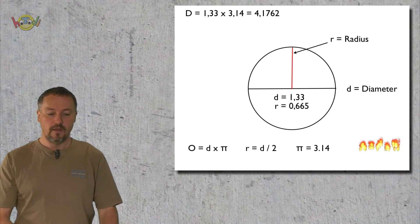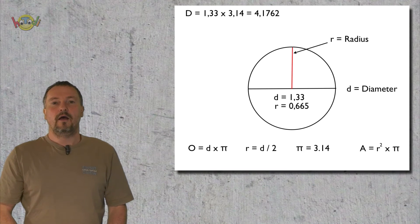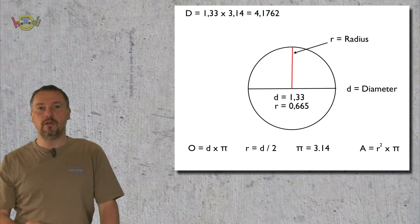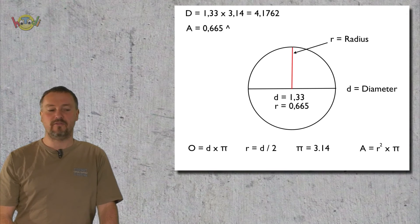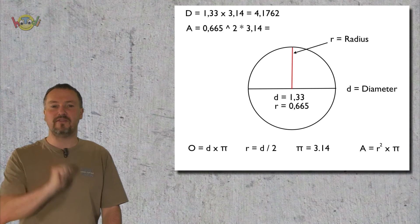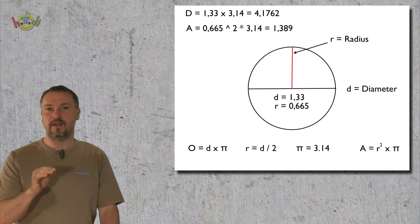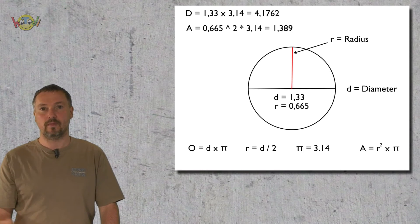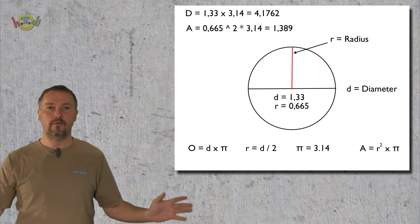Now the area: you calculate r squared multiplied by Pi. That means 0.665 multiplied by itself, then multiplied by 3.14. In the end you have 1.389 — square meters, square feet, square yards, whatever you want. That's it! Calculating a circle is unbelievably easy — this round thing with no edges, no corners.